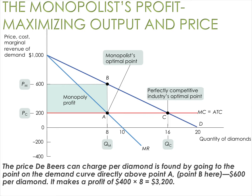Do we expect all marginal cost curves to look like this? Probably not — they probably exhibit an upward sloping shape, but don't worry about that for now. We're looking for the quantity where marginal revenue equals marginal cost. Where they cross, point A, is our optimal, profit-maximizing quantity — that's eight. It costs us on average $200 to produce one more, but demanders will pay $600 to buy eight. So going up to the demand curve gives us a price of $600. Quantity of eight, price of $600 is the profit-maximizing combination.